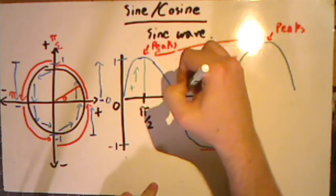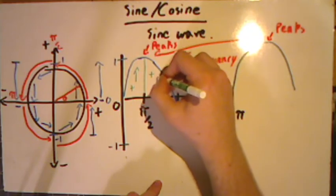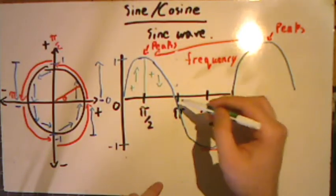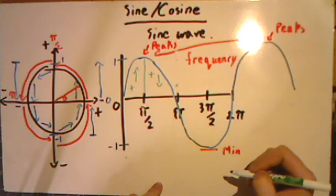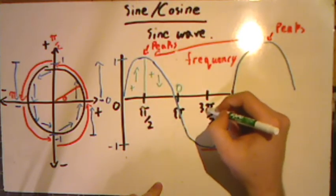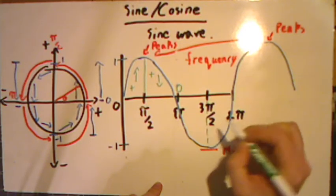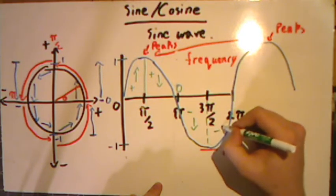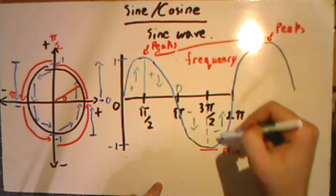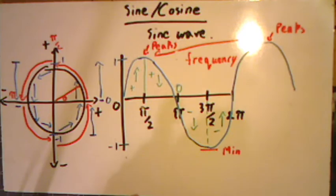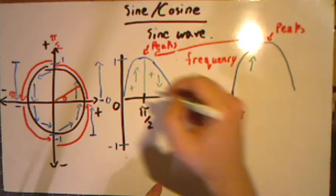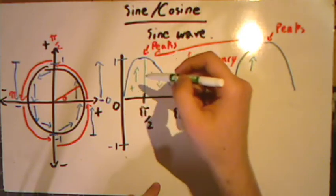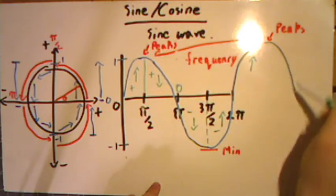As we go from pi over 2 to pi, this is also positive but decreasing — that would be our 90 to 180 degrees. We can see the pattern: after we decrease, we get a 0 value. We cut off at 3 pi over 2 where we are negative and decreasing still, until we go negative increasing, and so on, always having a repeating pattern of positive increasing, positive decreasing, negative decreasing, and negative increasing.